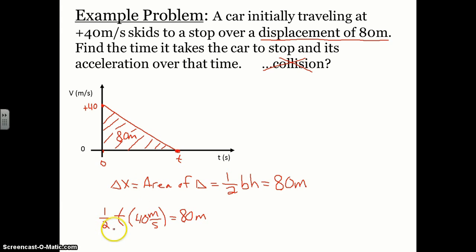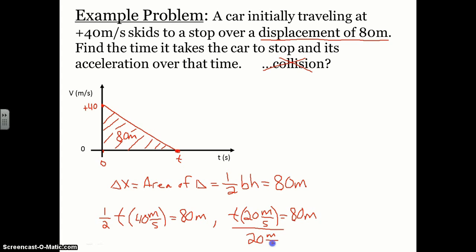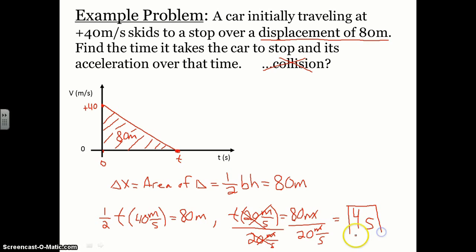To solve for t, divide both sides by 20 meters per second. The 20 meters per second cancels on the left, and time equals 80 meters divided by 20 meters per second. The meter units cancel, seconds move to the numerator, and 80 divided by 20 is 4. So it takes 4 seconds for the car to skid to a stop.